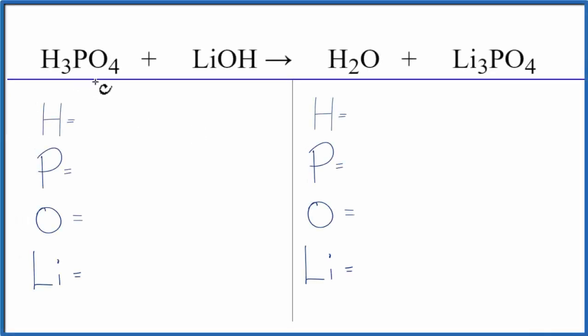To balance this equation, H3PO4 plus LiOH, let's add the atoms up on each side. We have three hydrogens, plus we need to take into account this hydrogen as well. So we have four hydrogen atoms.